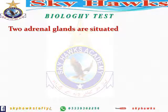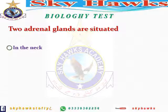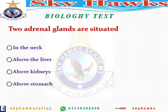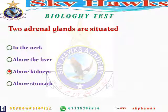Moving to the next question: two adrenal glands are situated — where? Options are: in the neck, above the liver, above the kidneys, above the stomach. Always remember that the word 'adrenal' is related to kidneys. So the answer is above the kidneys.